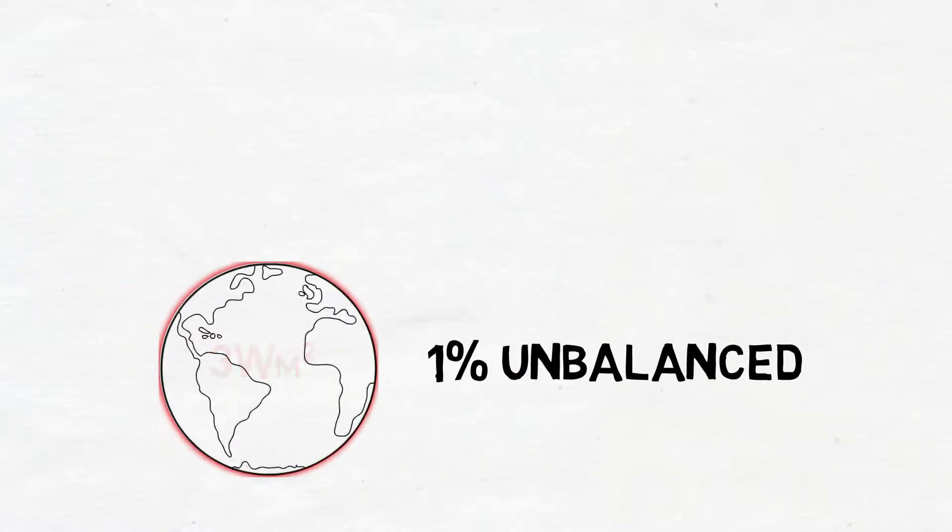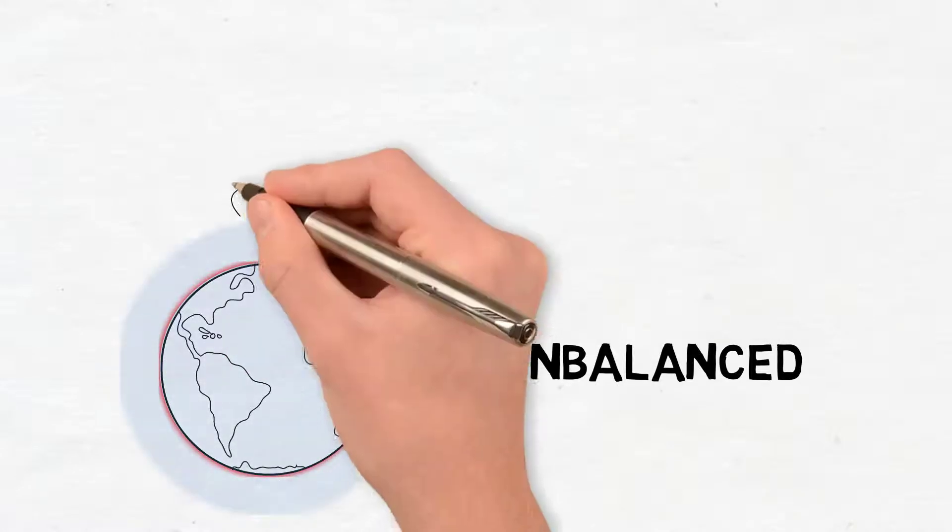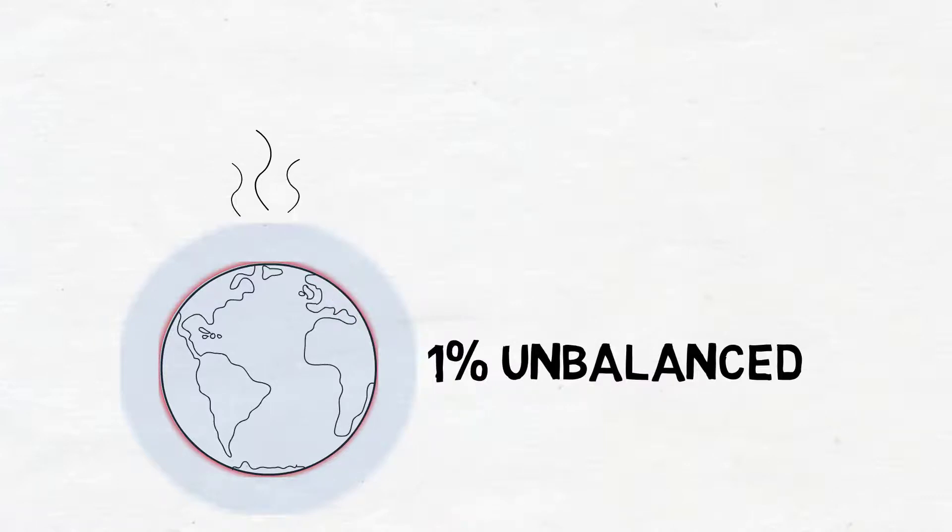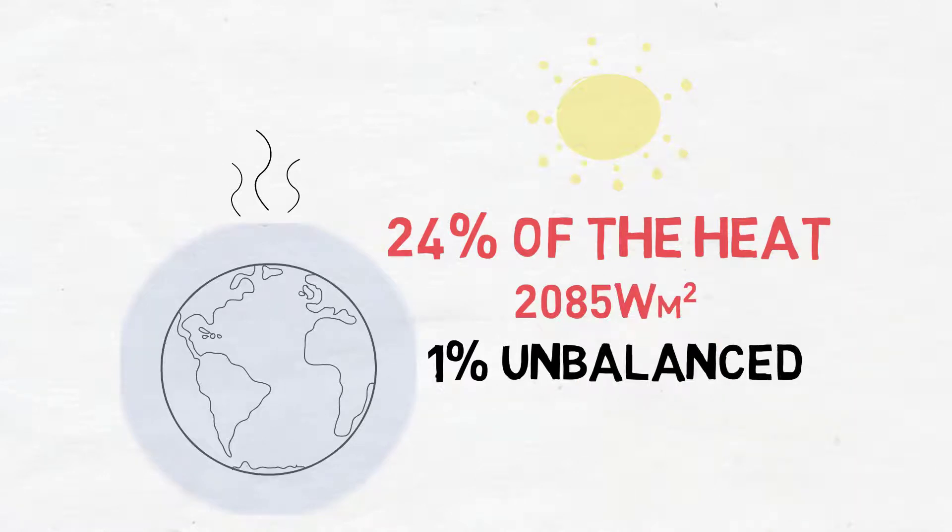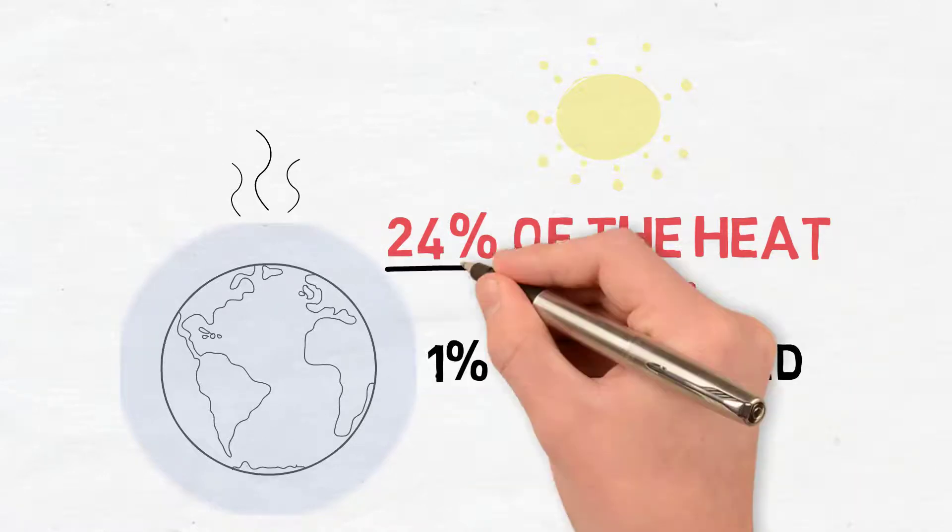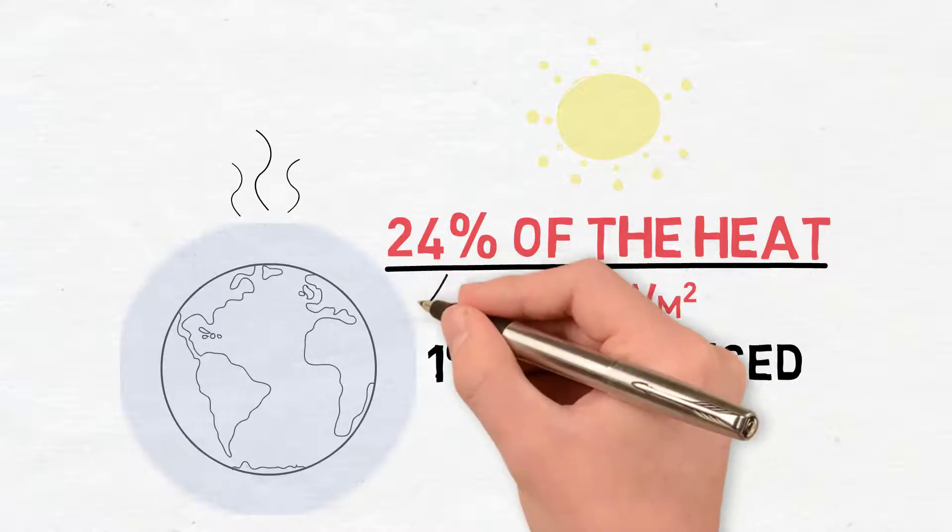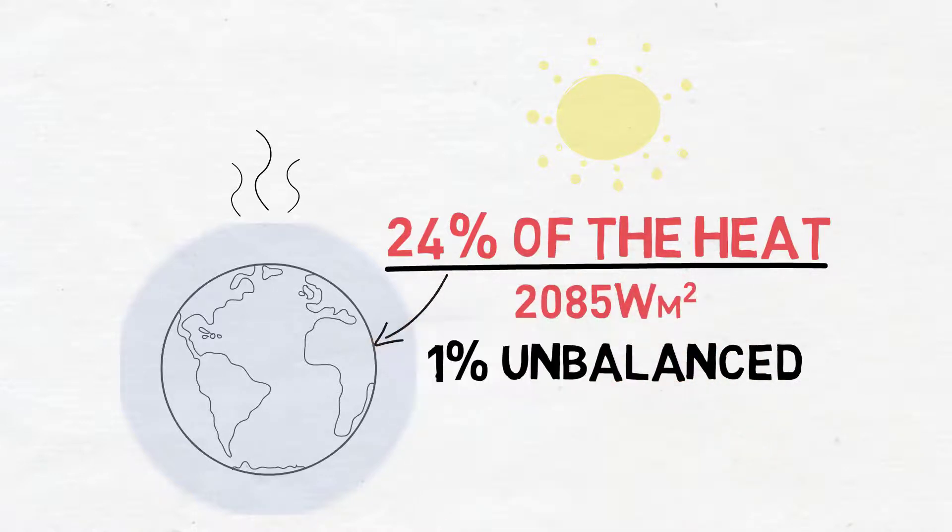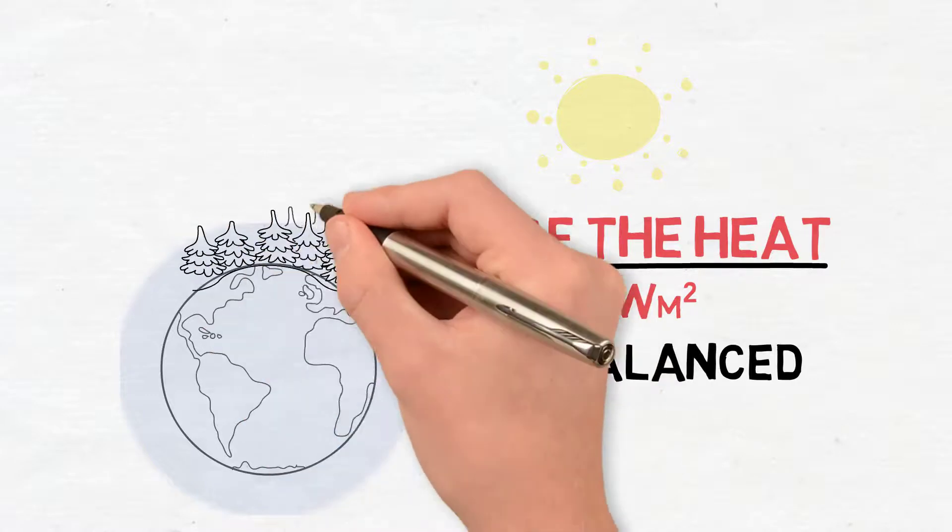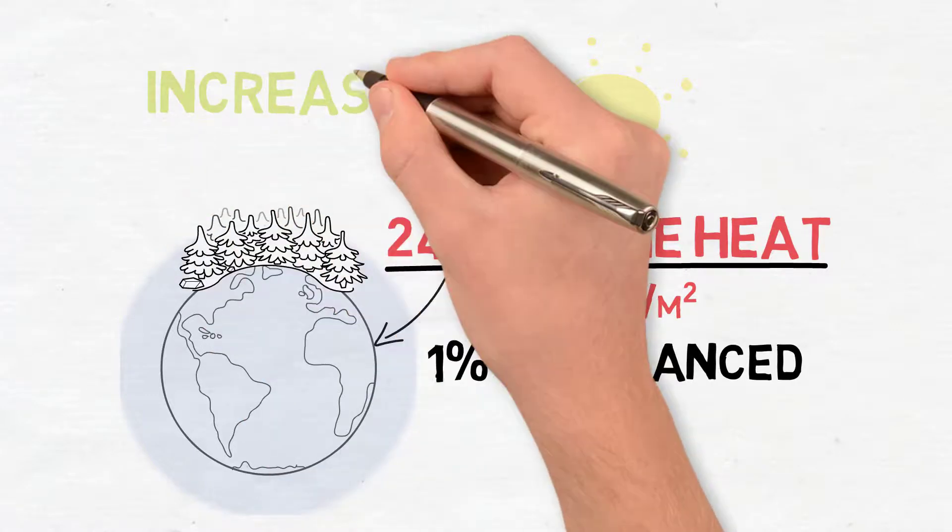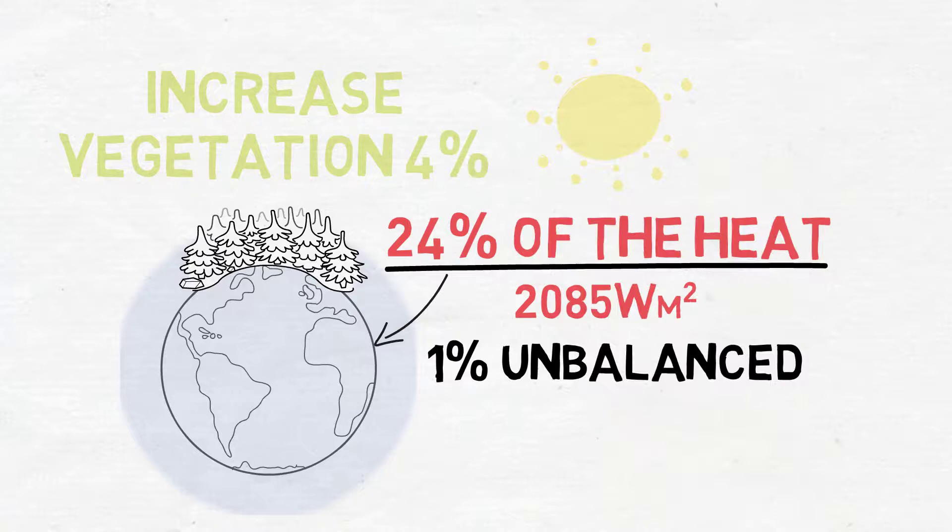But the Earth's transpiration, these latent heat fluxes through transpiration, evaporation, they naturally take 24% of the heat that we're getting from the sun, taking it from the surface back up into the atmosphere. That's 2085 watts per square metre globally or 24% of the heat energy this process is actually using to take it from the surface. And so theoretically, if we just increase the vegetation 4%, we can do that 1% cooling effect.